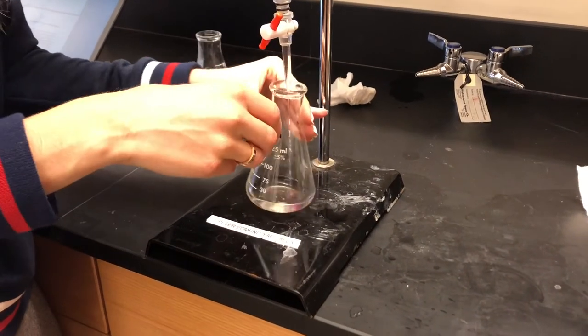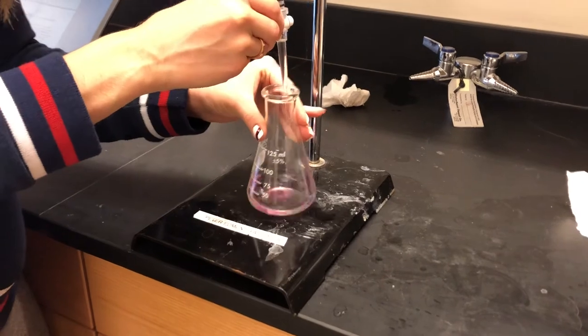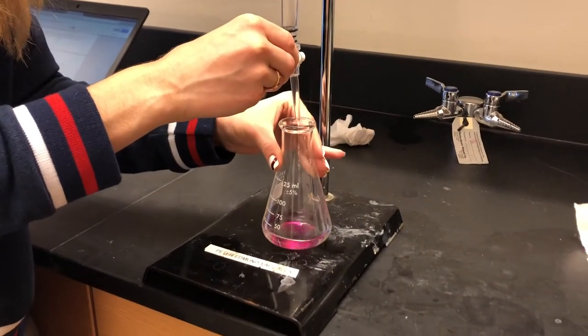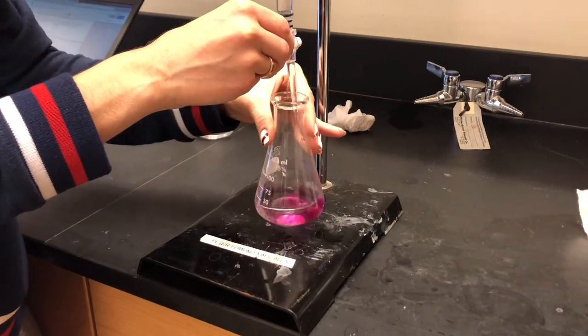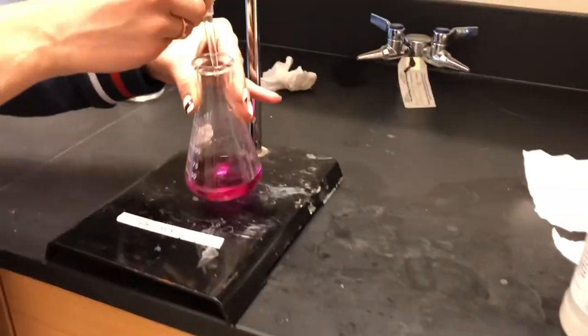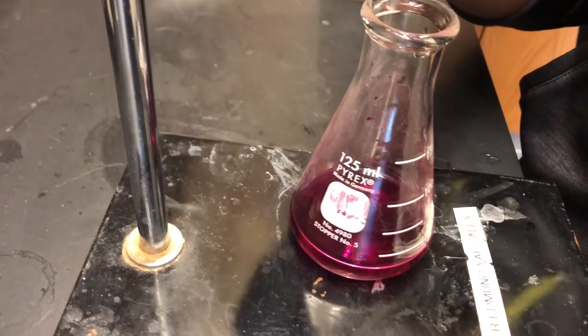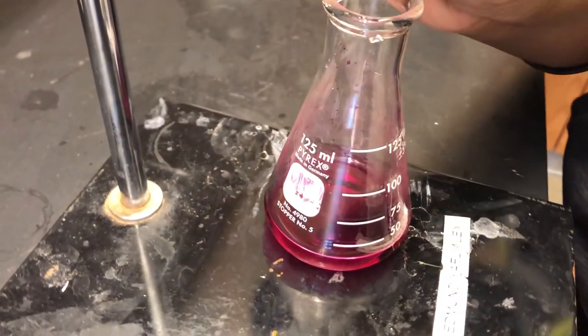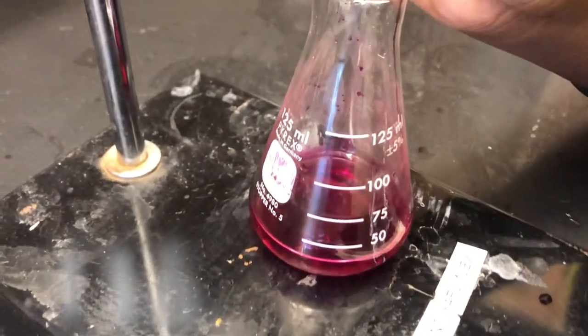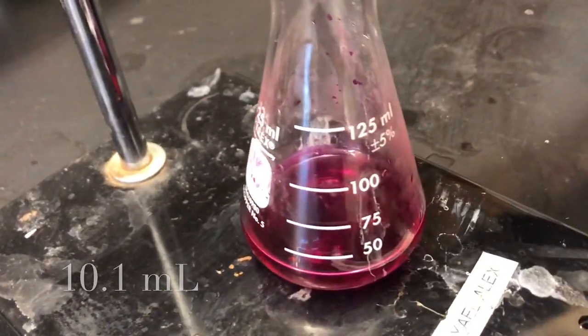Slowly add sodium hydroxide to the flask while swirling it. Stop adding it when the solution turns pink and stays pink. Record how many milliliters the solution dropped as the final volume of your titration. In other words, end volume minus start volume. Our volume of the titration that we recorded, for example, was 10.1 milliliters.